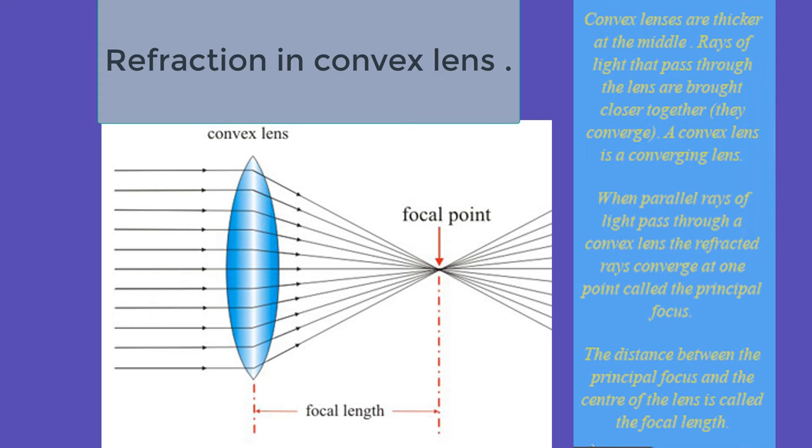Refraction in convex lens. Convex lenses are thicker at the middle. Rays of light that pass through the lens are brought closer together. They converge. A convex lens is a converging lens. When parallel rays of light pass through a convex lens the refracted rays converge at one point called the principal focus. The distance between the principal focus and the center of the lens is called the focal length.